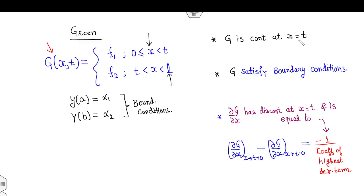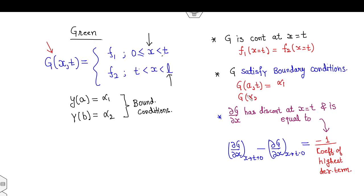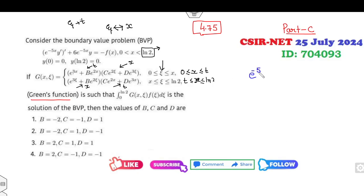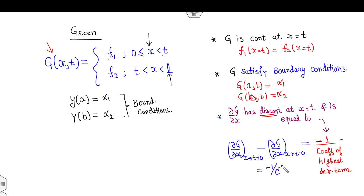The first target is that G must be continuous at x = t, meaning the function value at x = t from f1 equals that from f2. Second, G must satisfy the boundary conditions: G(a, t) = α₁ and G(b, t) = α₂. The third condition is that the partial derivative of G with respect to x has a jump discontinuity equal to −1 over the coefficient of the highest derivative term. In this problem the highest derivative is y'', so this value will be −1/e^(5x).